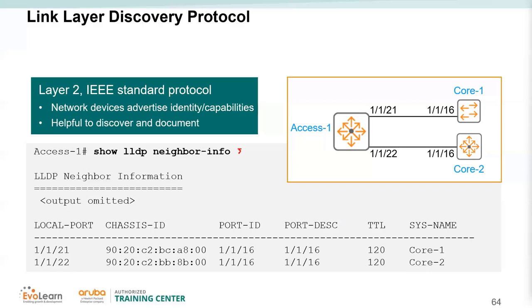LLDP is independent of platform — a CX switch can be connected to an Aruba OS switch and they will discover each other via LLDP, which is enabled by default on both. CDP is also understood and can be communicated if a connected device is running CDP.